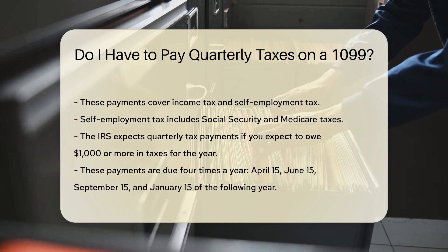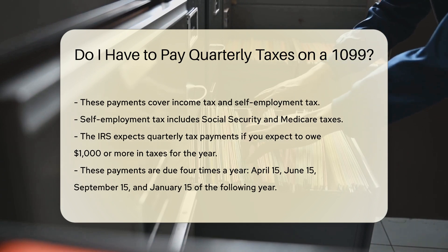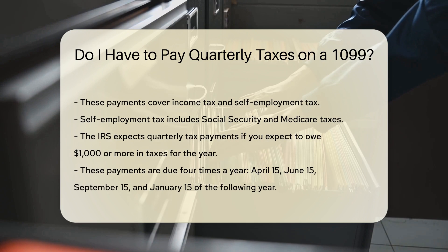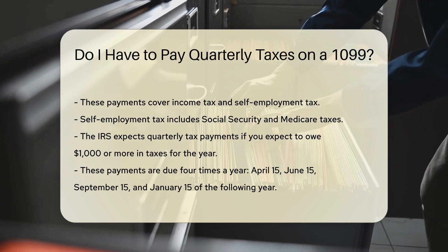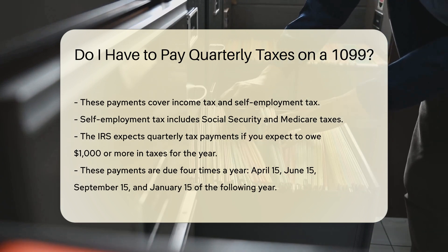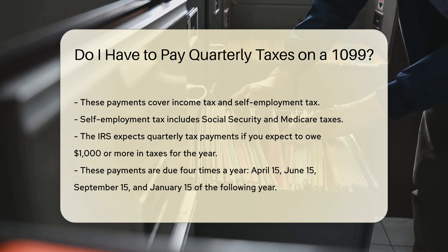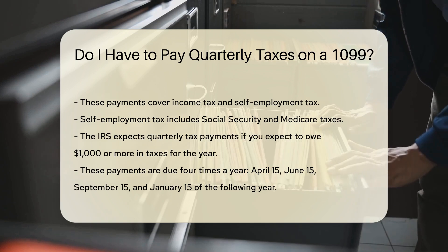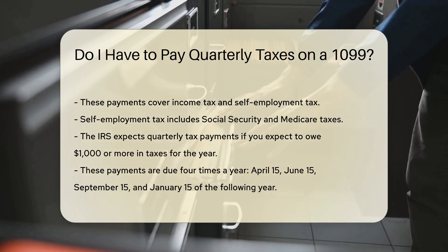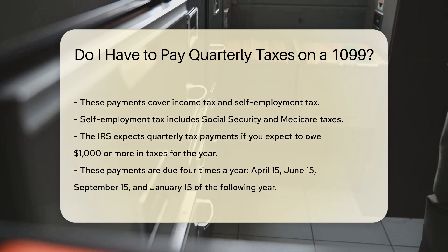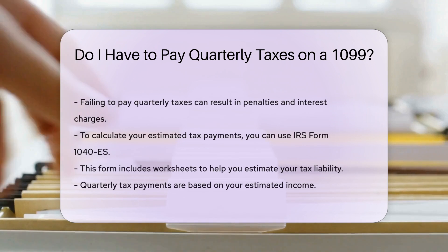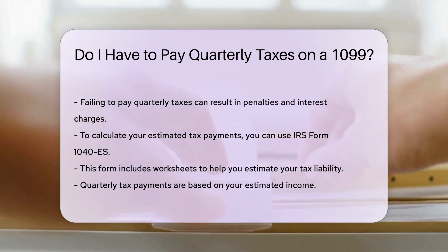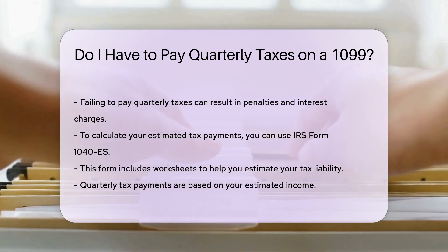The IRS expects quarterly tax payments if you expect to owe $1,000 or more in taxes for the year. These payments are due four times a year: April 15th, June 15th, September 15th, and January 15th of the following year. Failing to pay quarterly taxes can result in penalties and interest charges.